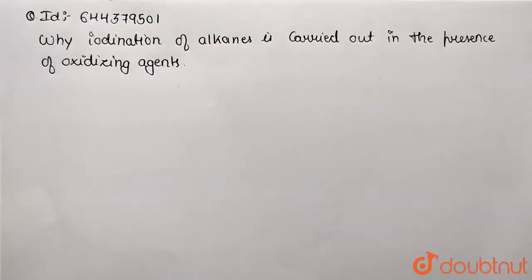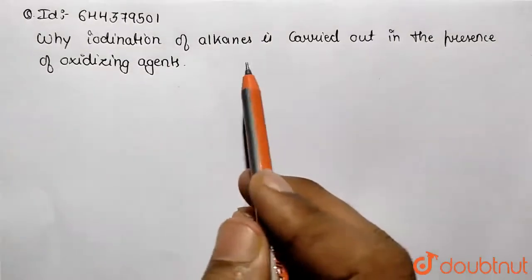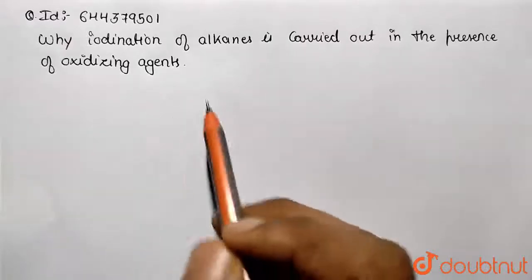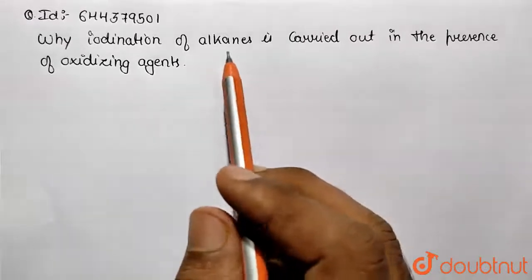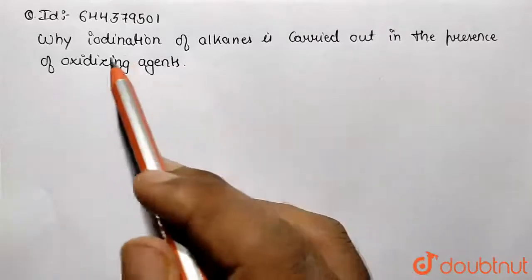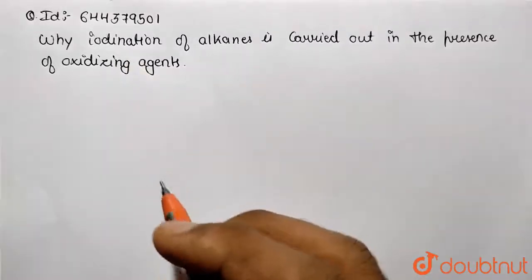Hello students, in this given question we need to answer why iodination of alkanes is carried out in the presence of oxidizing agent. So we need to answer why alkanes are being iodinated in the presence of oxidizing agent in the iodination process.